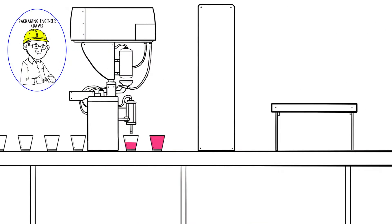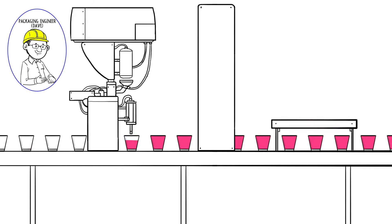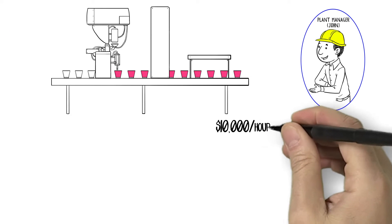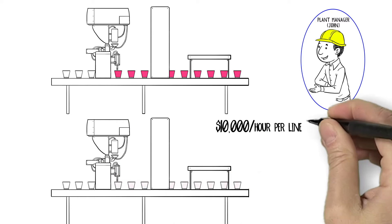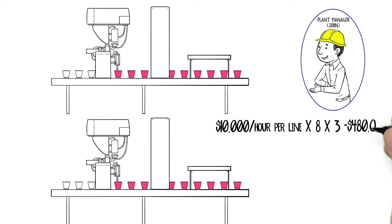Sure, we shut down both packing lines three times last quarter because we ran out of finished product. That cost us eight hours each time. That's 48 hours of downtime at $10,000 per hour per line. That's $480,000 of lost margin right there.